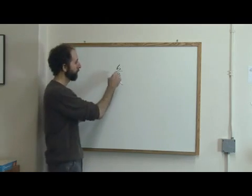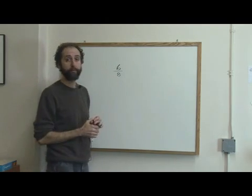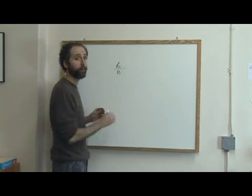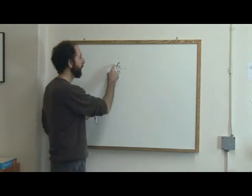The way you do it is you take the top number and divide it by the bottom number. That's true for any fraction. If you want to turn a fraction into a decimal or a percent, you just divide the top number by the bottom number.